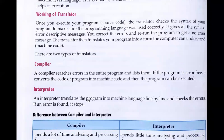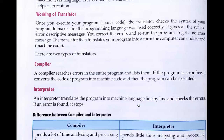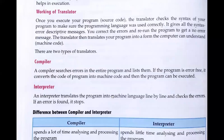An interpreter, just like a compiler, translates the program into machine language. However, unlike the compiler which runs the entire program at once, the interpreter runs the program line by line. It checks for errors line by line, and if any error is found it stops execution immediately.